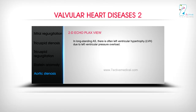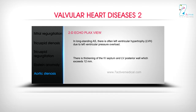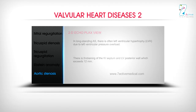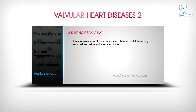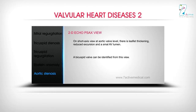In long-standing AS, there is often left ventricular hypertrophy (LVH) due to left ventricular pressure overload. There is thickening of the IV septum and LV posterior wall exceeding 12 mm. 2D Echo PSAX View: On short-axis view at aortic valve level, there is leaflet thickening, reduced excursion, and a small AV lumen. A bicuspid valve can be identified from this view.